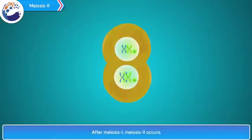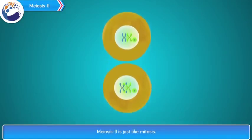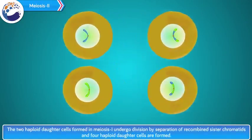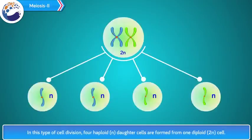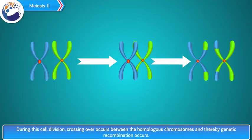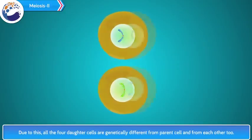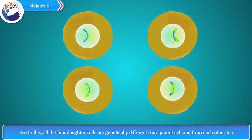After meiosis 1, meiosis 2 occurs. Meiosis 2 is just like mitosis. In this stage, the two haploid daughter cells formed in meiosis 1 undergo division by separation of recombined sister chromatids, and four haploid daughter cells are formed. Process of gamete production and spore formation occurs by meiosis. In this type of cell division, four haploid daughter cells (N) are formed from one diploid cell (2N). Crossing over occurs between homologous chromosomes, causing genetic recombination, so all four daughter cells are genetically different from the parent cell and from each other.